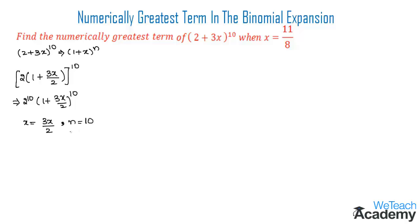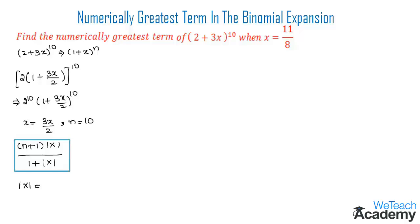To find the numerically greatest term, the formula is (n+1) × |x| / (1 + |x|). First let us find the value of |x|. We have x = 3x/2, so substituting the x value of 11/8, we get 3/2 × 11/8 = 33/16, which is the value of |x|.